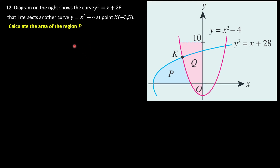We are asked to find the area of region P. Looking at region P, it is the area under the blue color curve, but this is only valid until the intersection point.